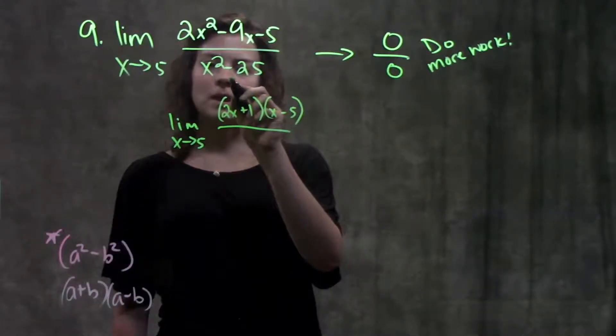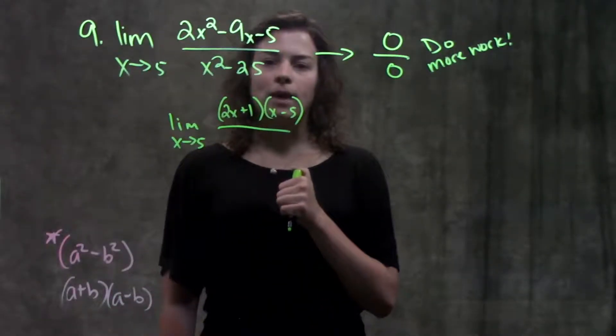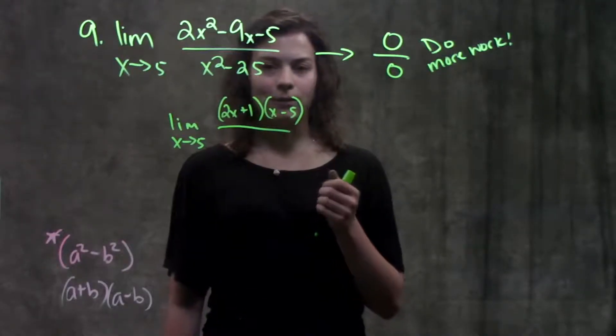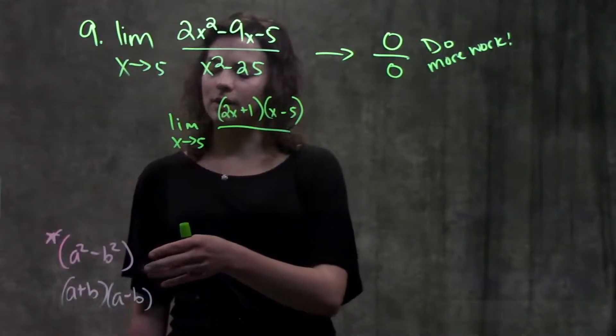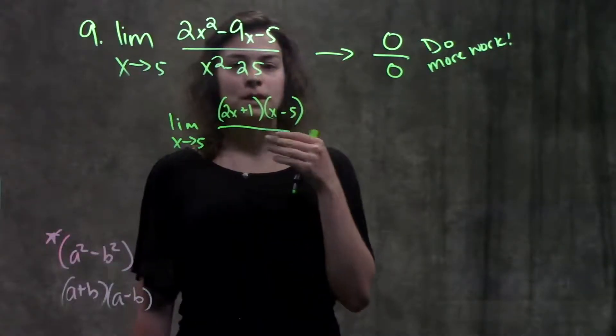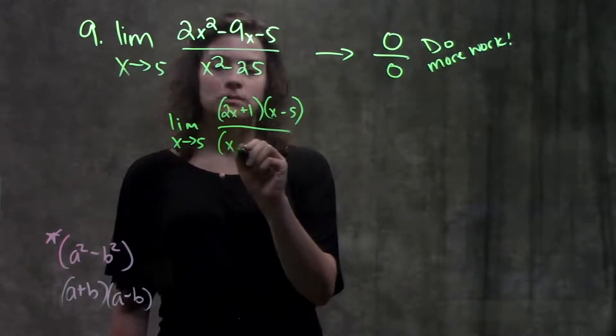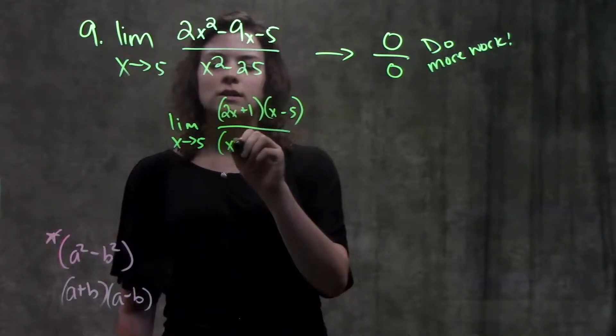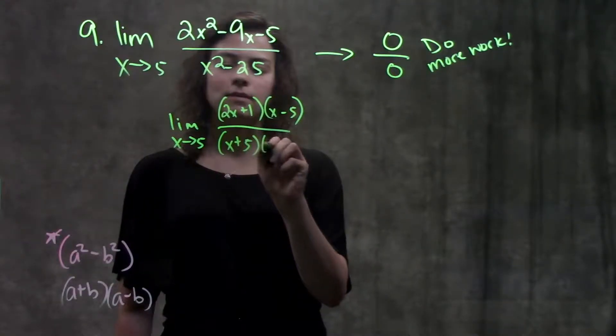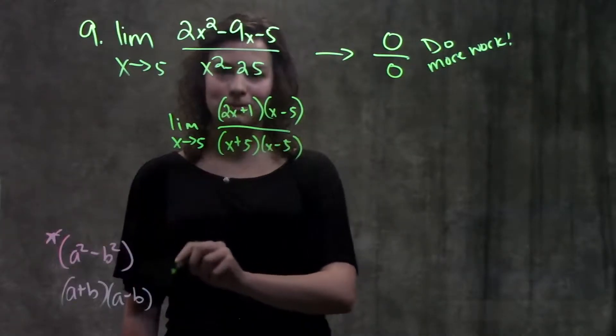And on the bottom here, we don't have a quadratic, but we have something called the difference of perfect squares. If you forgot what that pattern was, I wrote it down here for you. If you have two perfect squares being subtracted from each other, that just factors down into their square roots being added and subtracted. So this comes down into (x + 5) and (x - 5). It follows this pattern here.